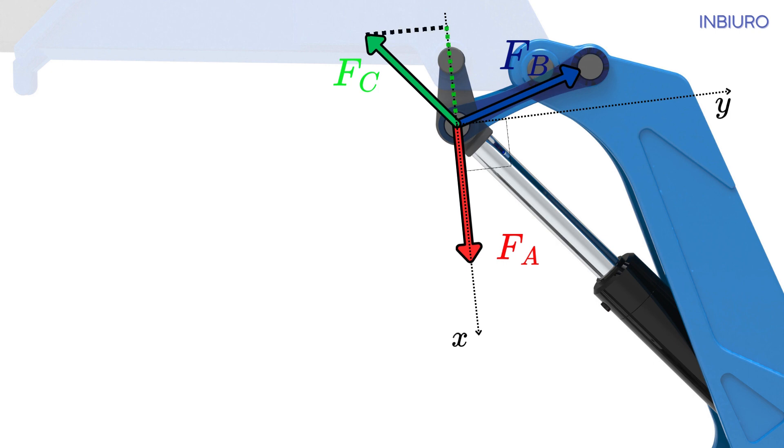Projection of F C on x-axis, F C X, plus projection of F B on x-axis equals force F A. And projection of force F C on y-axis equals projection of F B on y-axis.